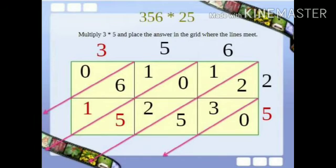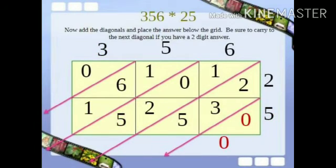When all the multiplications are complete, sum the numbers along the diagonals. Carry double digits to the next place and write the answer. Now add the diagonals and place the answer below the grid. Be sure to carry to the next diagonal if you have a 2 digit answer.